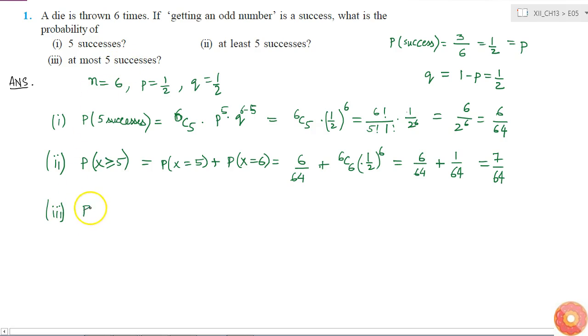For the third part, I'm asked for at most 5 successes: P(X ≤ 5). Instead of calculating this as P(X=0) + P(X=1) + ... + P(X=5), I can write it as 1 - P(X=6), because X=6 is the only value left out. So P(X ≤ 5) = 1 - 6C6 × (1/2)^6 = 1 - 1/64 = 63/64.